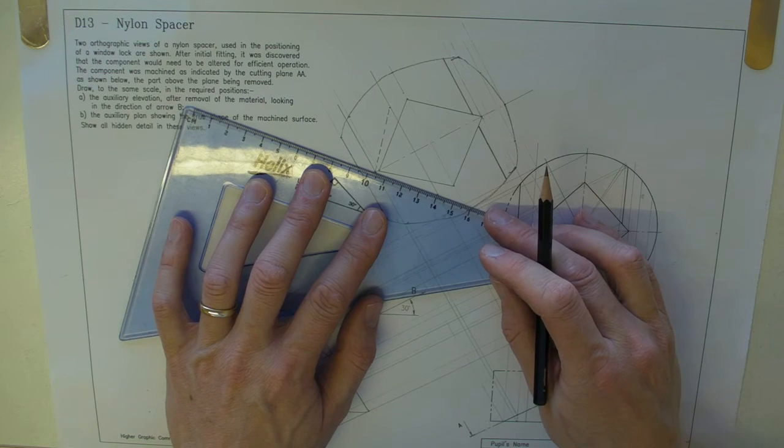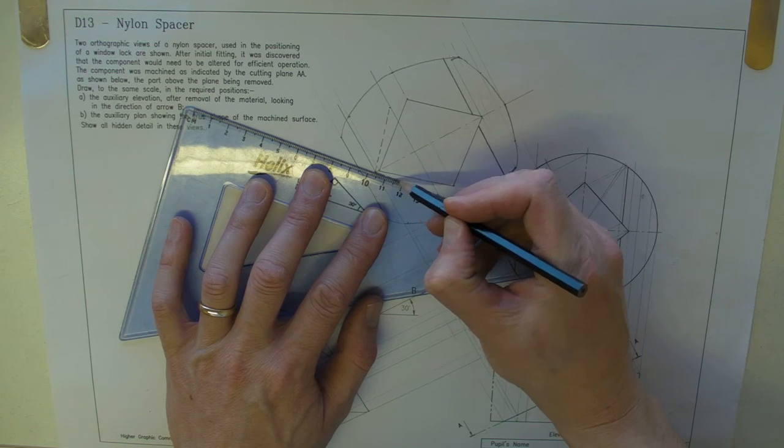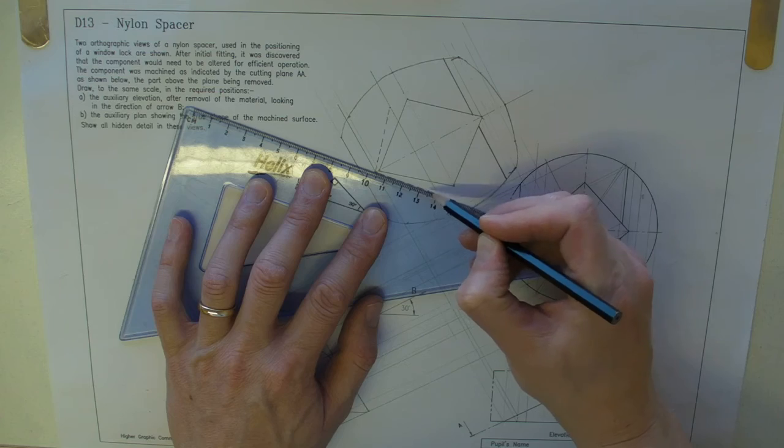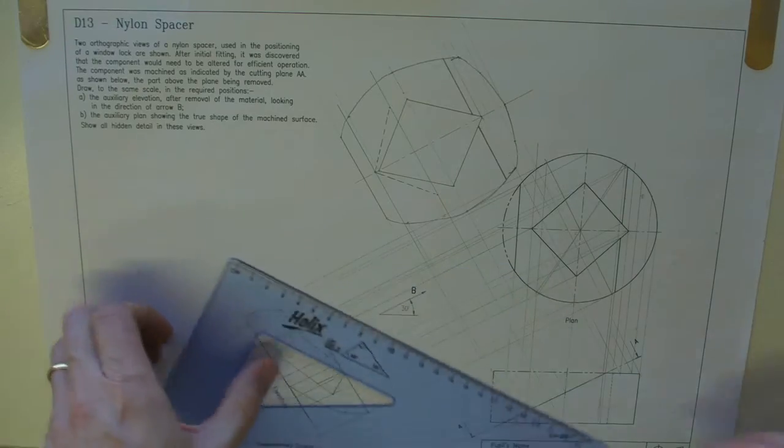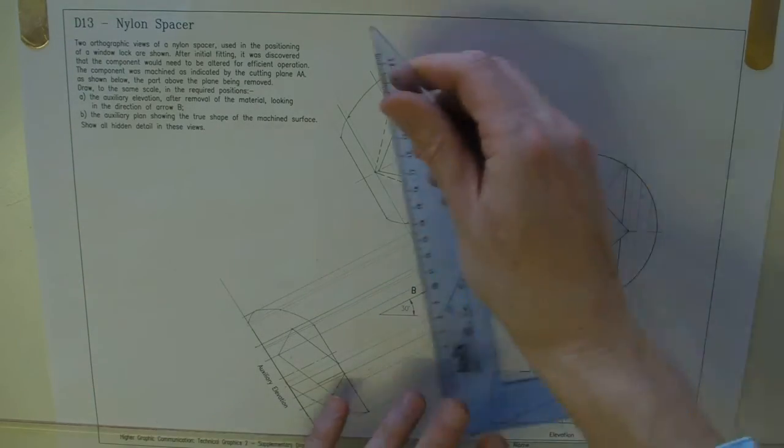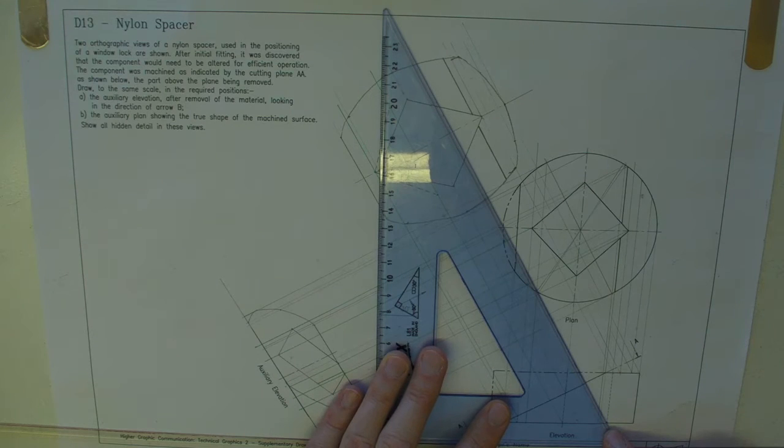And we are asked to show hidden detail, so we'll include it. Okay, so there's that part there. And then there's going to be a part that we can see as well. So we'll project from the lower half of the point.